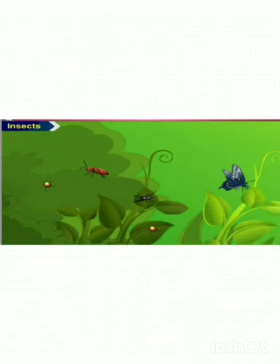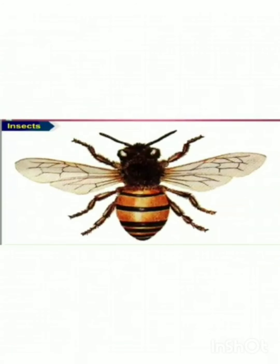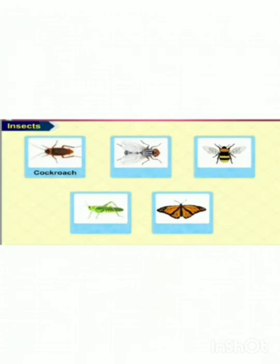Third one: insects. Insects are very small creatures. All insects have six legs. They usually have two pairs of wings. The cockroach, housefly, bee, grasshopper and butterfly are some of the insects.